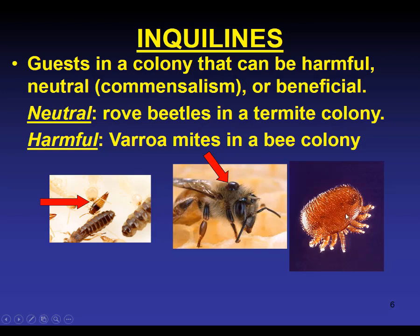One difference to notice: the entire body is one single segment. Mites and ticks have their heads, thorax, and abdomens all in one big nugget — they are not spiders. Spiders have their head and thorax fused into one piece, and then the abdomen is a second body piece. Here's a honeybee with a varroa mite riding on its back. These things are parasites.